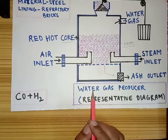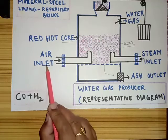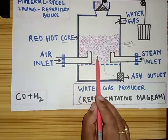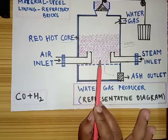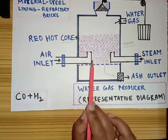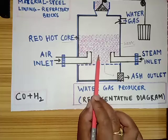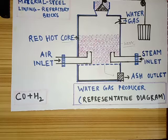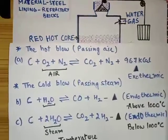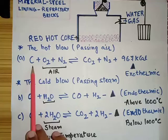Now, coming to the chemical aspects — the chemical reactions involved in the production of water gas. Water gas production generally consists of two steps. The first step is passing air into the red hot coke. When we pass air into the coke, this air helps the coke to burn and increase the temperature of the system. This process is also known as the hot blow. Reaction A is involved during the burning process. Carbon is supplied from the coke.